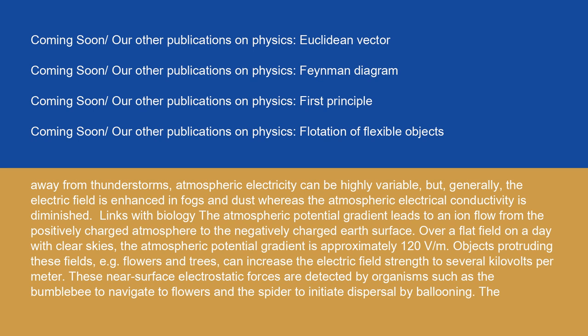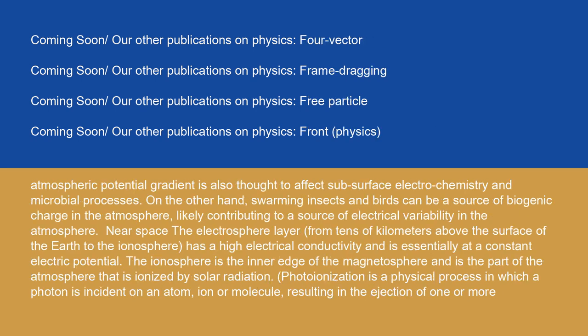Links with biology: the atmospheric potential gradient leads to an ion flow from the positively charged atmosphere to the negatively charged Earth's surface. Over a flat field on a day with clear skies, the atmospheric potential gradient is approximately 120 V/m. Objects protruding these fields, e.g. flowers and trees, can increase the electric field strength to several kilovolts per meter. These near-surface electrostatic forces are detected by organisms such as the bumblebee to navigate to flowers, and the spider to initiate dispersal by ballooning. Atmospheric potential gradient is also thought to affect subsurface electrochemistry and microbial processes. On the other hand, swarming insects and birds can be a source of biogenic charge in the atmosphere, likely contributing to electrical variability in the atmosphere.